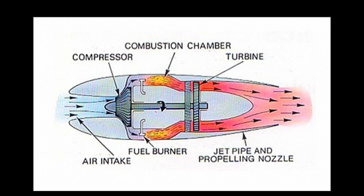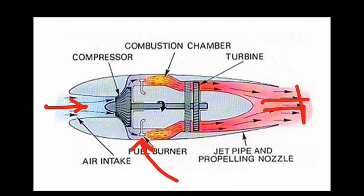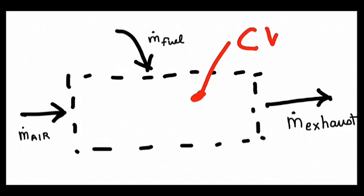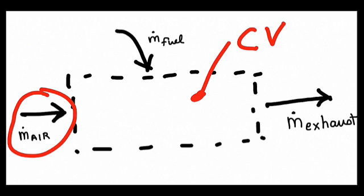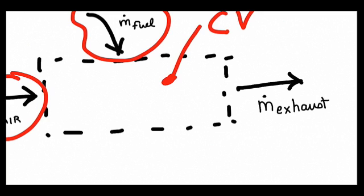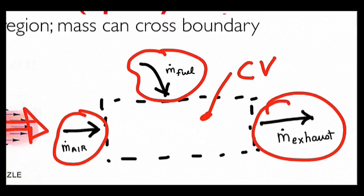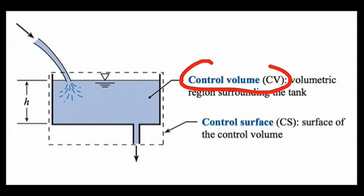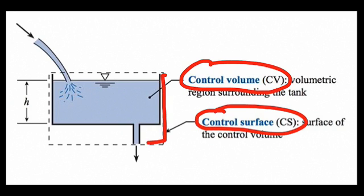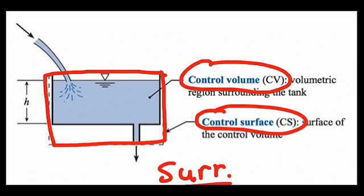A second example of a control volume: modeling a jet engine with flow in, fuel coming in, and hot exhaust flowing out. My control volume encompasses the engine, with a mass flow rate in, a mass flow rate of fuel in, and a mass flow rate of exhaust out. The control volume is the volumetric region selected by the engineer. The control surface is the boundary of this region, and the surroundings are everything outside the control volume.